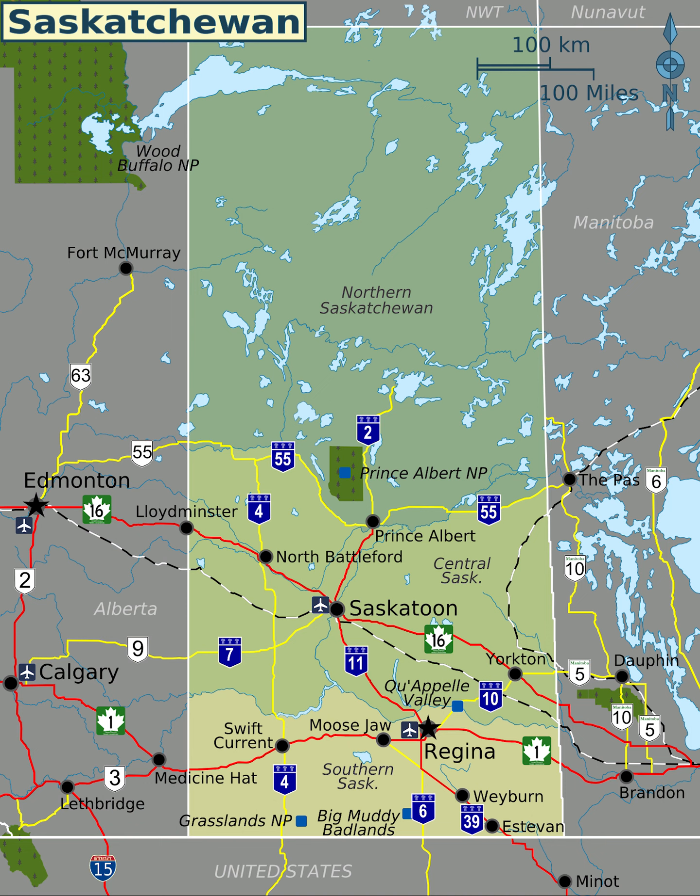The province has 14 major drainage basins made up of various rivers and watersheds draining into the Arctic Ocean, Hudson Bay, and the Gulf of Mexico.